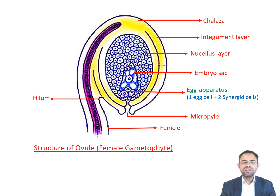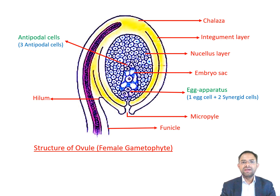Another group of three cells are called the antipodal cells. The antipodal cells have no definite functions and they disintegrate after fertilization of the egg cell. A group of two cells remain lying in the center of the embryo sac and form the polar nuclei.